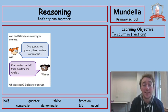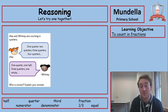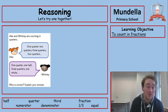But let's move on and try and do some reasoning next. Alex and Whitney are counting in quarters. Alex says one quarter, two quarters, three quarters, four quarters. Whitney says one quarter, one half, three quarters, one whole. Who is correct? Explain your answer.